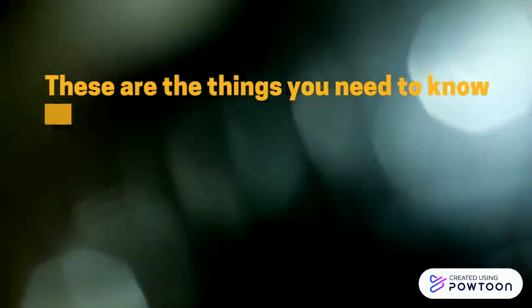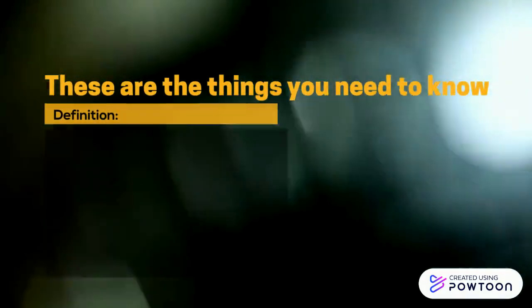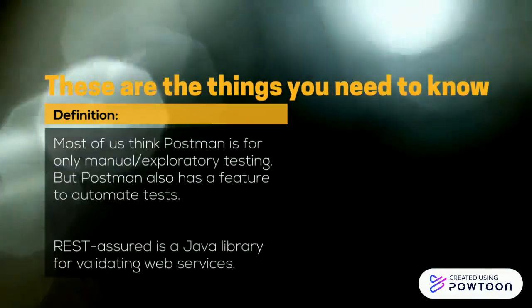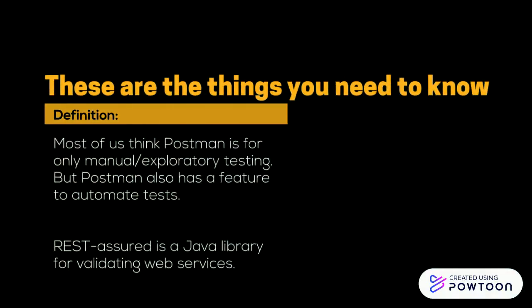Let's start from the beginning. Most of you QA guys or girls think that Postman is only for manual exploratory testing, but Postman also has a feature to automate tests, while Rest Assured is a Java library for validating web services.